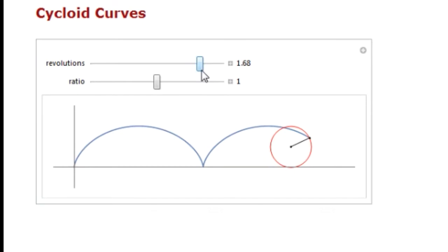What we'll do is look at rolling motion as a combination of purely rotational motion happening while purely translational motion is happening at the same time.